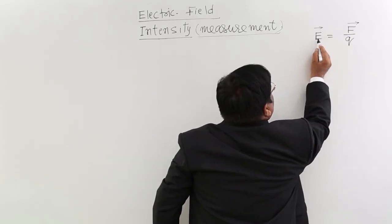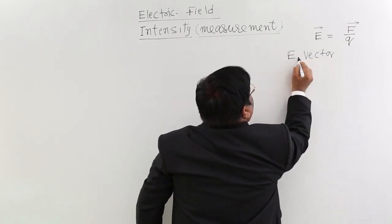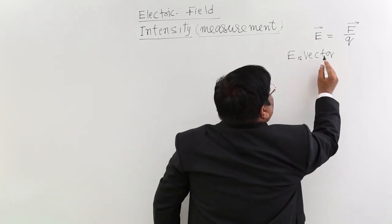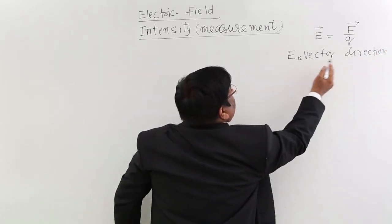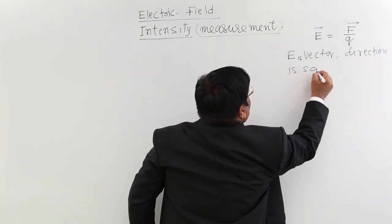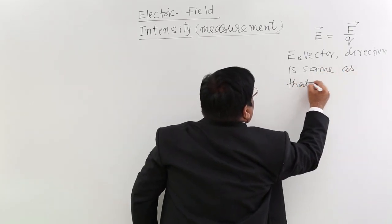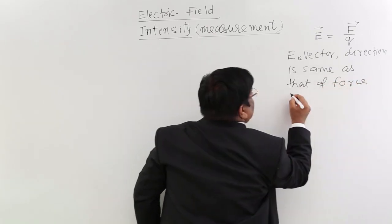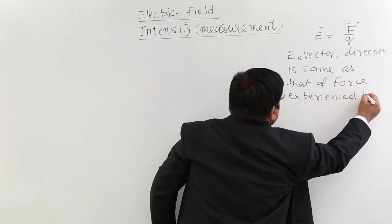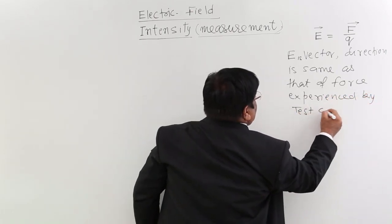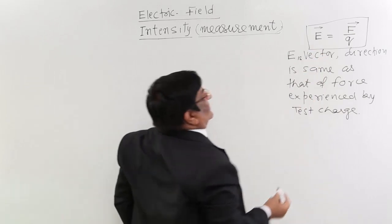Electric field is a vector quantity. E is a vector and its direction is the same as the direction of force — specifically, the direction of force experienced by the test charge. This is one way of measurement of electric field.